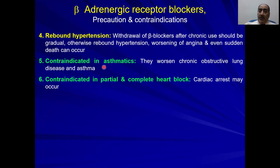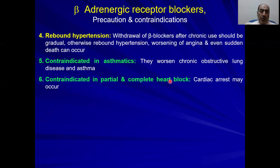Contraindications: beta blockers are contraindicated in asthmatic patients because the lung has beta-2 receptors which normally cause bronchodilation, and blocking them causes bronchoconstriction. They are contraindicated in partial or complete heart block — a condition affecting conductivity starting at the sinoatrial node. If you add the negative chronotropic effect of these drugs to an existing heart block, this will be aggravated and could lead to cardiac arrest. Abrupt withdrawal must be avoided as it causes rebound hypertension, which can worsen angina due to increased oxygen demand and could even result in sudden death — gradual withdrawal is required.